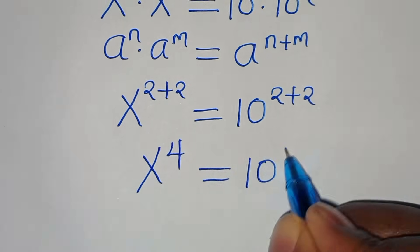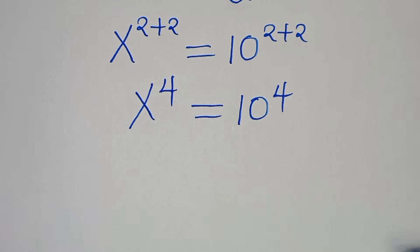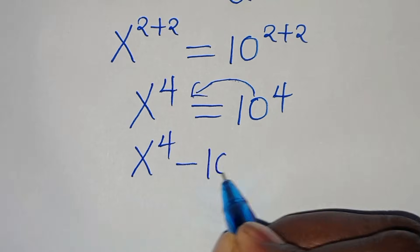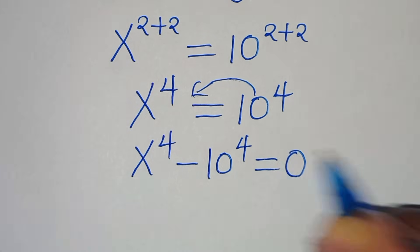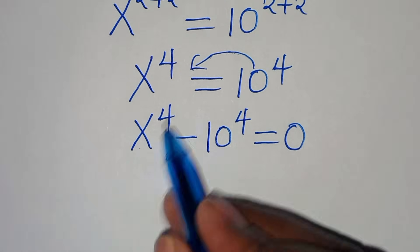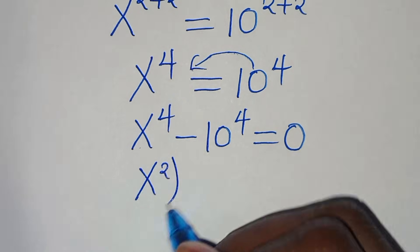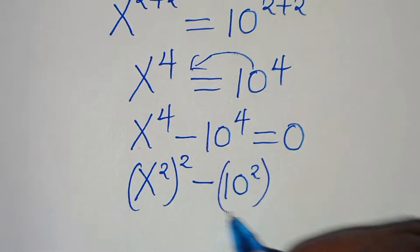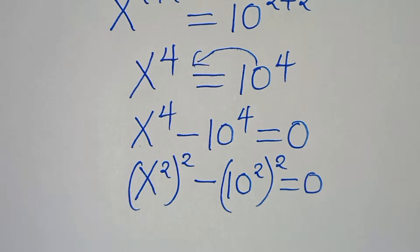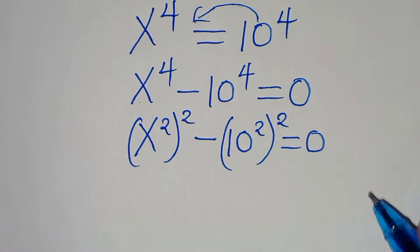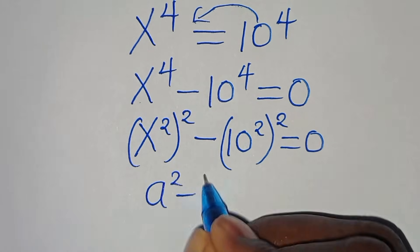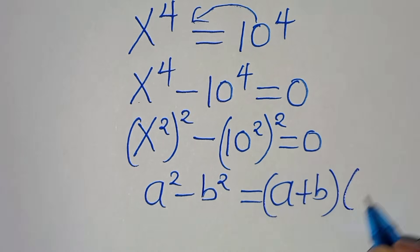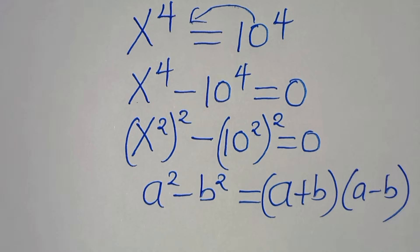This is equal to 10 to the power of 4. Let's take 10 to the left hand side so that we have x to the power of 4 minus 10 to the power of 4, this is equal to 0. We can express x to the power of 4 as x squared raised to the power of 2, subtract 10 to the power of 2 raised to the power of 2, this is equal to 0. This equation is of the form a squared minus b squared, which we can express as a plus b multiplied by a minus b.